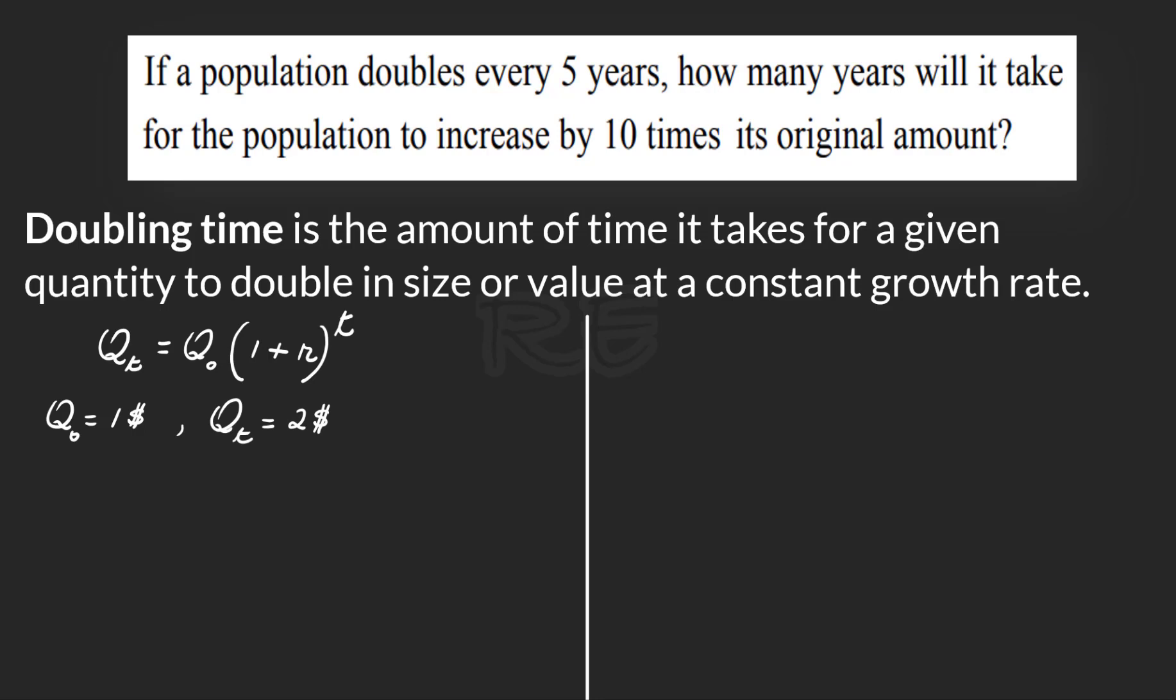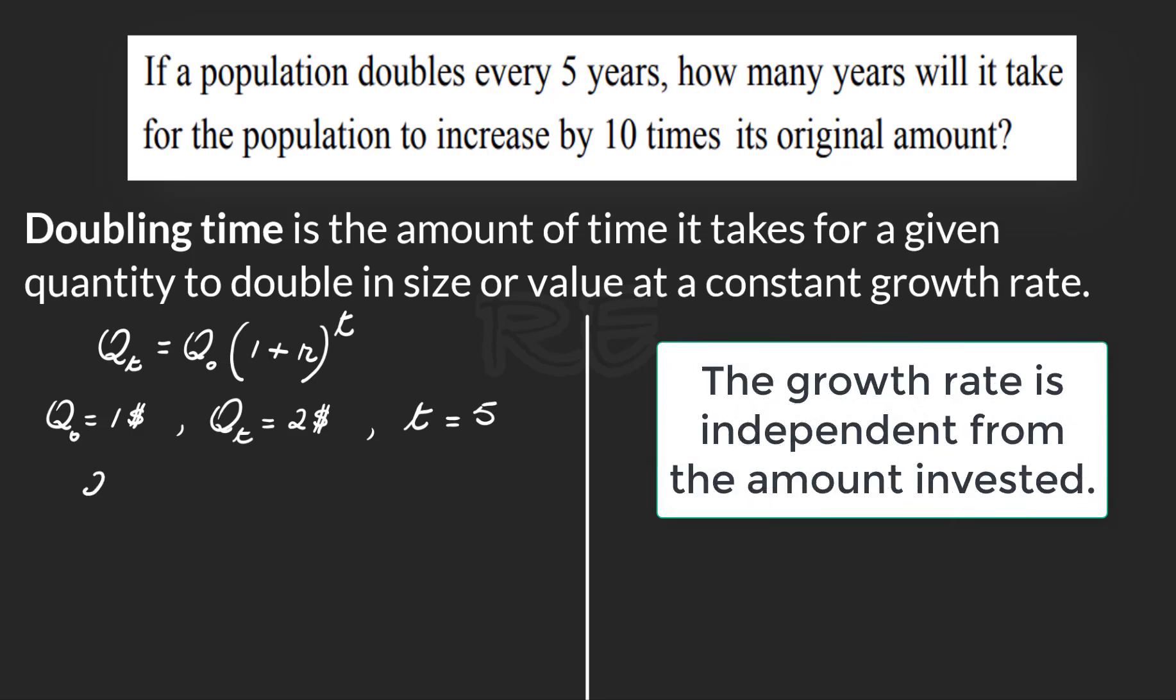So Qt, the accumulated amount, will be two dollars and the time will be five years. Since the growth rate is independent from the amount invested, we can calculate the growth rate using the formula above.